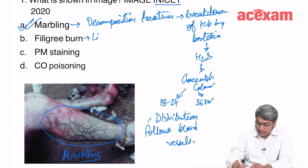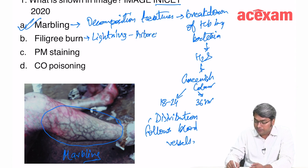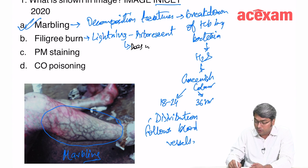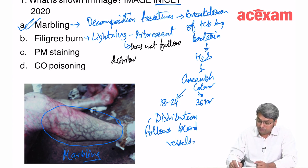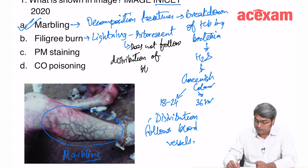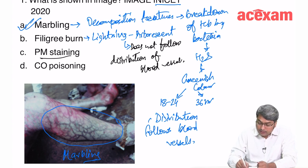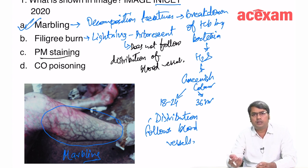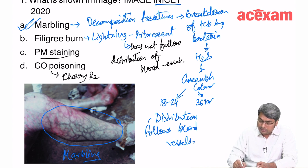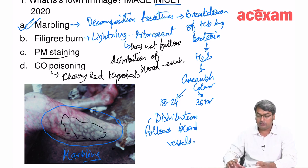A filigree burn, produced by lightning, also has a branching pattern and is also known as an arborescent burn or arborescent mark — but it does not follow the blood vessels. That is the only difference from marbling. Postmortem staining (hypostasis/livor mortis) causes a color change in the dependent parts of the body — most commonly dark brown or purplish-brown. In carbon monoxide poisoning, there is cherry-red hypostasis. Based on the branching pattern following vasculature, the image is of marbling.